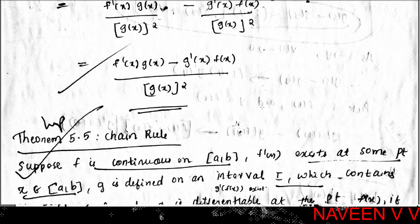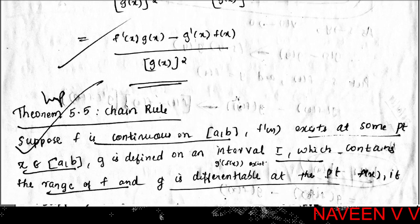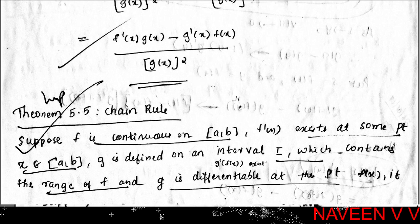Therefore, limit t→x of [(f/g)(t) - (f/g)(x)] / (t - x) exists and equals [g(x)·f'(x) - f(x)·g'(x)] / g(x)². So f/g is differentiable at x and (f/g)'(x) = [g(x)·f'(x) - f(x)·g'(x)] / g(x)², provided g(x) ≠ 0.